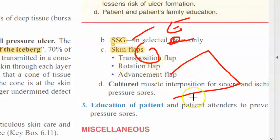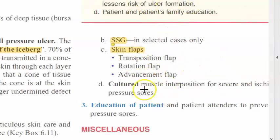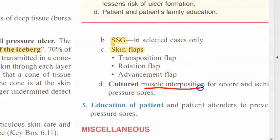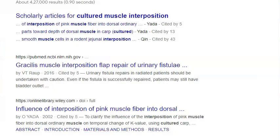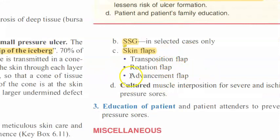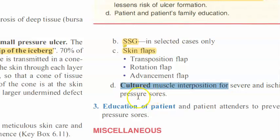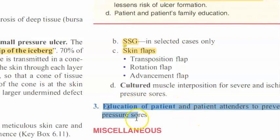Flap options include transposition, rotation, advancement, or free flap. For severe and ischemic pressure sores, cultured muscle interposition can be used. Patient and attenders should be educated to prevent recurrence.